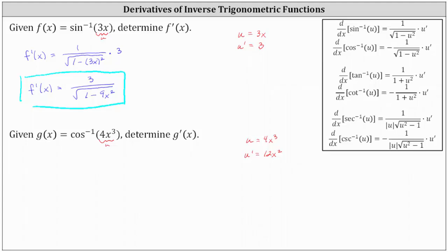If we take a look at the derivative formula for inverse cosine and compare it to the derivative formula for inverse sine, notice how the only difference is there's a negative sign included for the derivative of inverse cosine. Therefore, g prime of x is equal to negative one divided by the square root of the quantity one minus u squared, which gives us the square root of the quantity one minus the square of 4x cubed, times u prime, which is 12x squared.